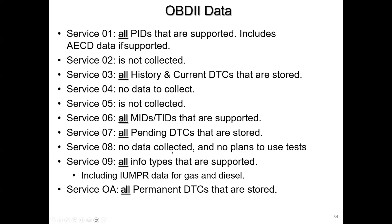Mode 8 — not going to happen — that's your control of the EVAP vent solenoid, nothing there. Mode 9 is the gold mine for BAR — that's our CVN, that's our Cal ID, and that's our in-use monitor performance tracking ratios. BAR and CARB are using those to determine what monitor tests are running with what frequency, and this is for both gasoline and diesel.